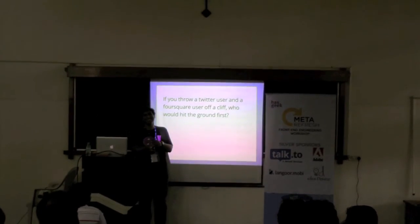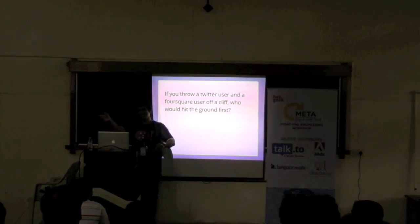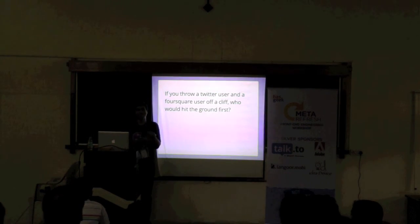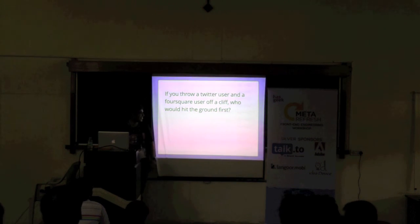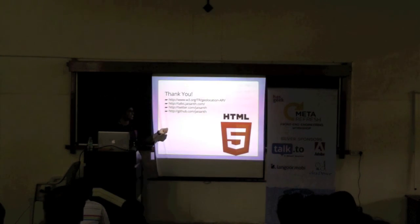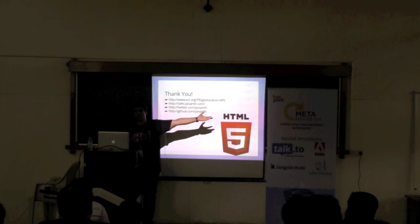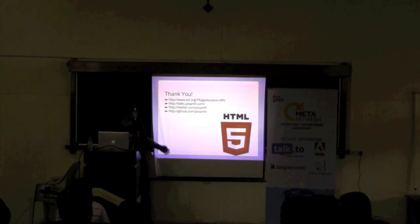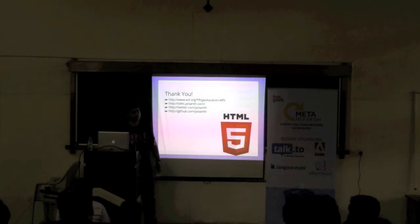Here's a joke: if you throw a Twitter user and a Foursquare user off a cliff, who hits the ground first? The Twitter user — because the Foursquare user would stop halfway to check in. These are my contact details — GitHub, Twitter handle, and so on. This is where I'm taking a lot of the API information from: the W3C specification. You can reach me through any of these channels, and I've given a few other talks you can check out at the provided URL.